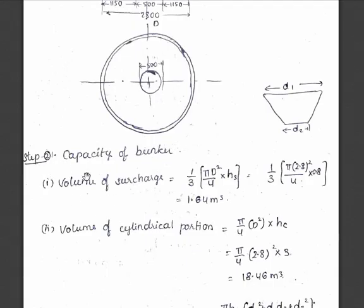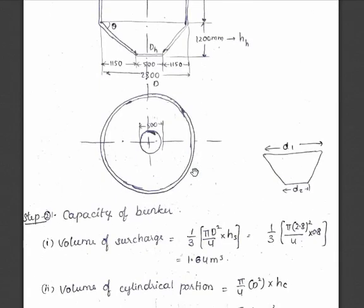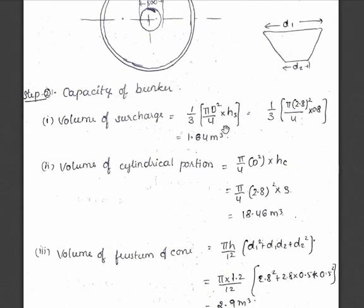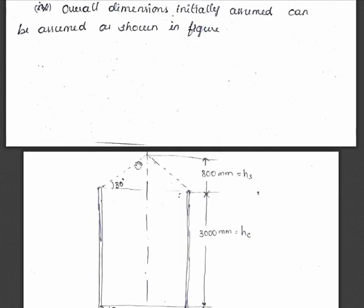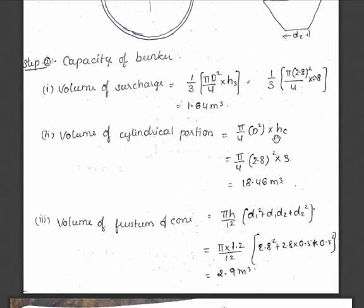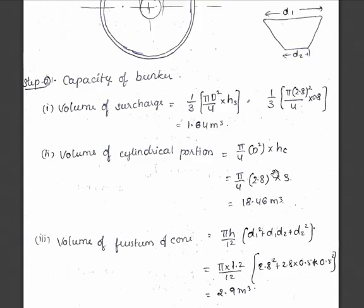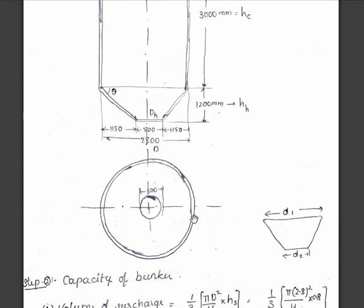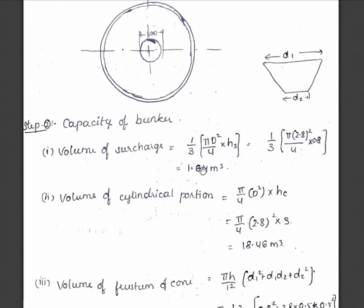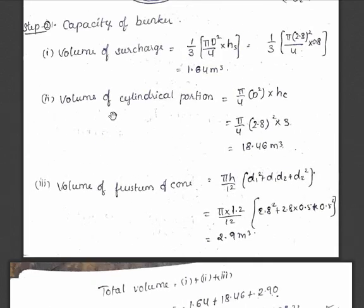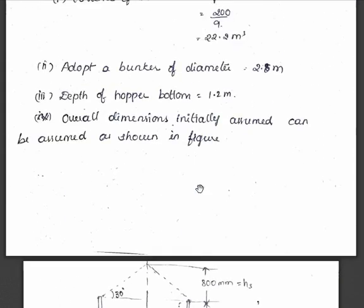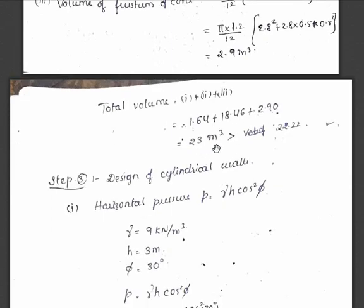Step 2 is the capacity check of the bunker. After assuming dimensions, we calculate the volume of each part. Volume of surcharge = (1/3) × (π D² / 4) × hs. Volume of the cylindrical portion = area × height of cylindrical portion. Volume of the frustum of cone (hopper bottom) is calculated using the standard formula. Total volume = sum of all three parts = 23 meter cube, which is greater than the required 22.2 meter cube, so we can proceed with design.